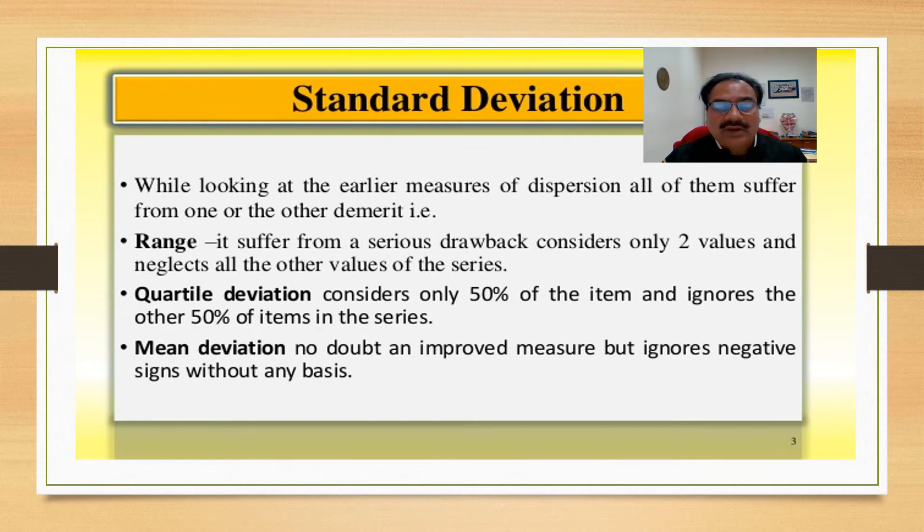While looking at the earlier measures of dispersion, all of them suffer from one or the other demerits. How? The range suffers from a serious drawback: it considers only two values and neglects all the other values of the series.